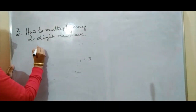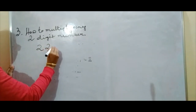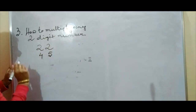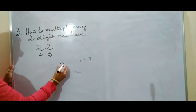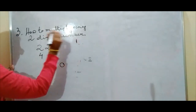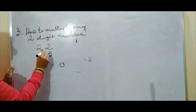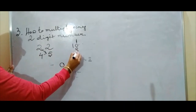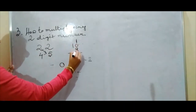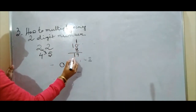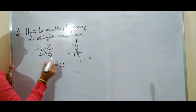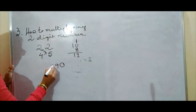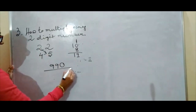Next, suppose 22 × 45: units digits 5 × 2 = 10, so write 0 and carry 1. Cross multiply: 5 × 2 = 10 and 2 × 4 = 8; add all: 10 + 8 + 1 (carry) = 19. So 9 goes here and carry 1. Then tens digits: 4 × 2 = 8 plus carry 1 = 9. Answer is 990.